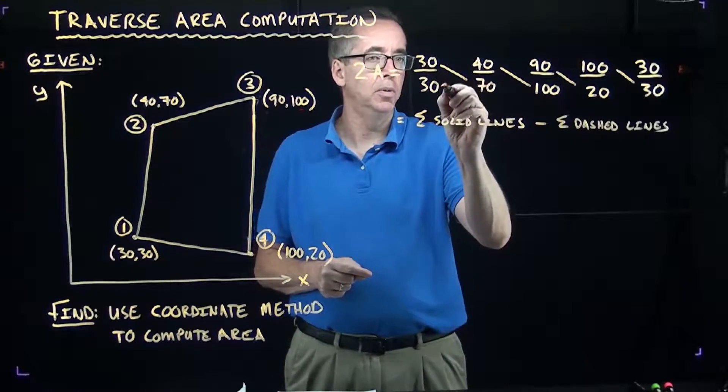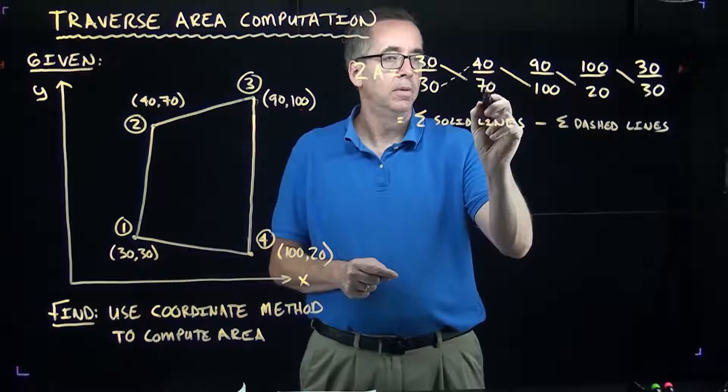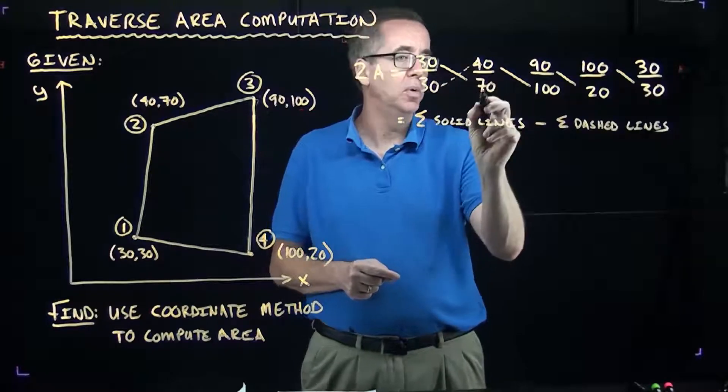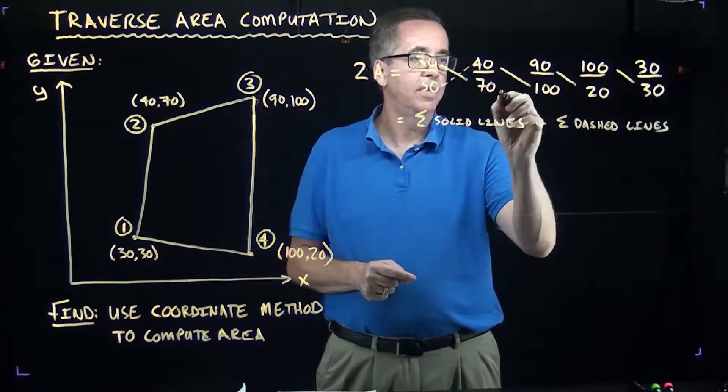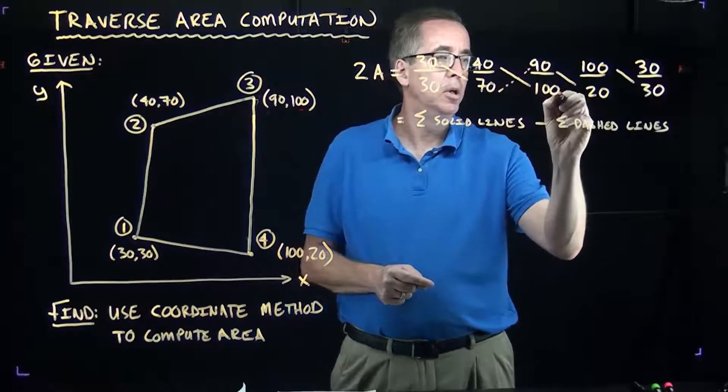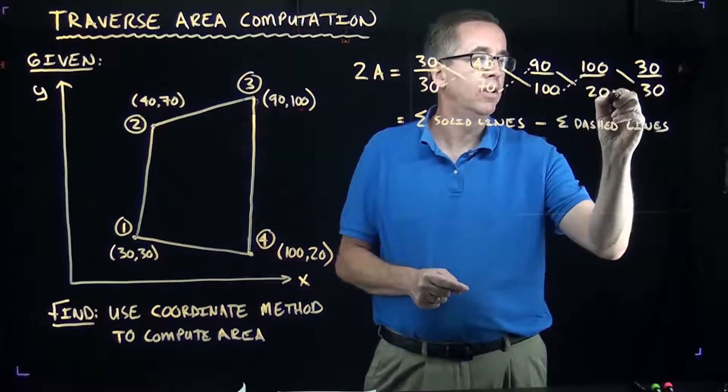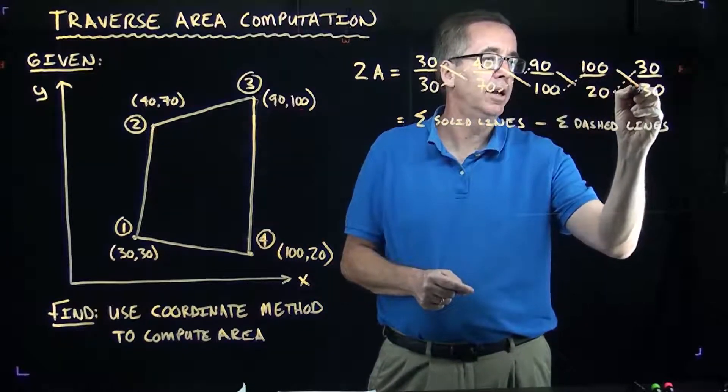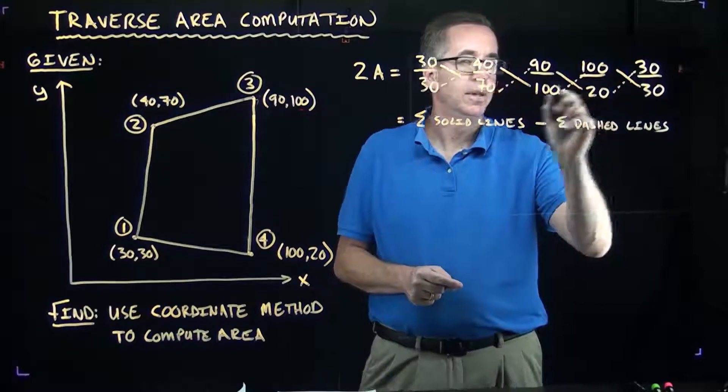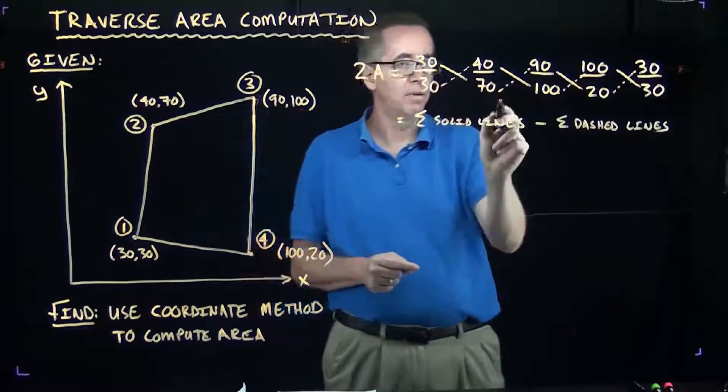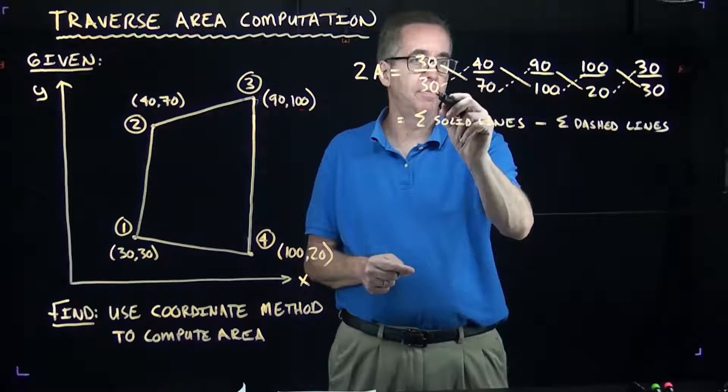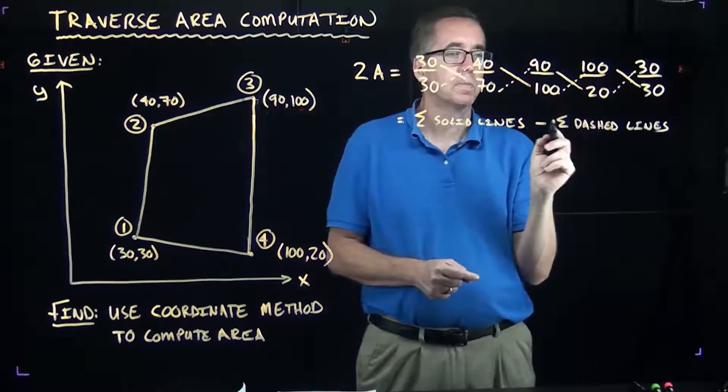The dash lines are, for example, Y1 times X2, Y2 times X3, and so forth. These are the dash lines. You have the solid lines that are going down from left to right, you have the dash lines that are going up from left to right. And then all we have to do now is just start multiplying all this stuff.